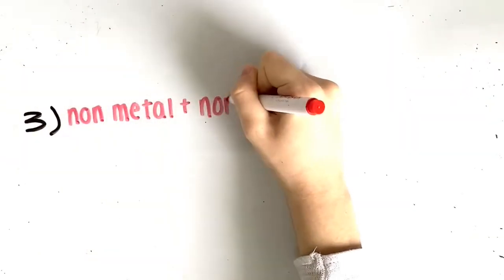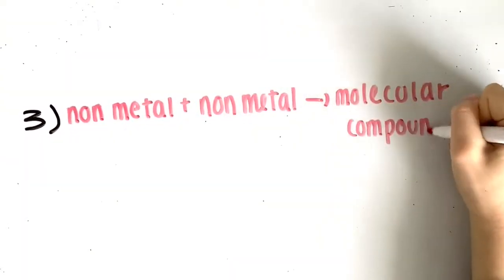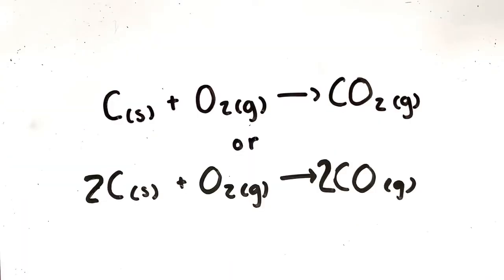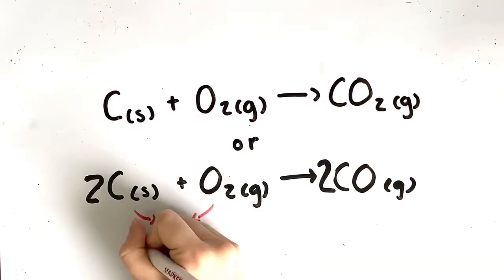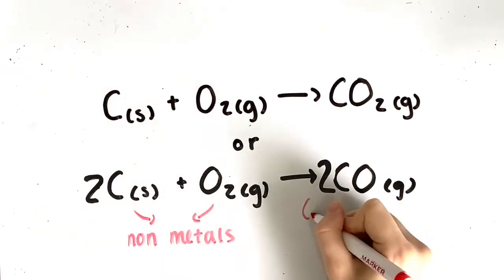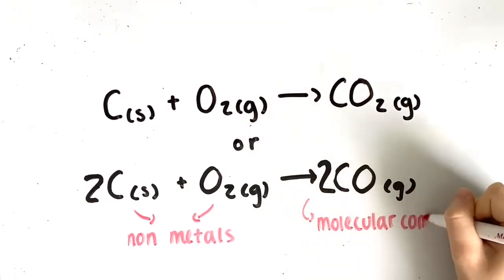Thirdly, two nonmetals combine to form a molecular compound. For example, carbon plus oxygen yields carbon dioxide, and carbon plus oxygen yields carbon monoxide. They are both nonmetals and carbon is multivalent, so they form molecular compounds.